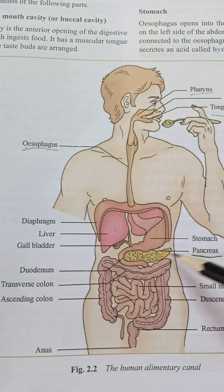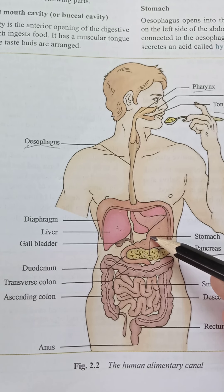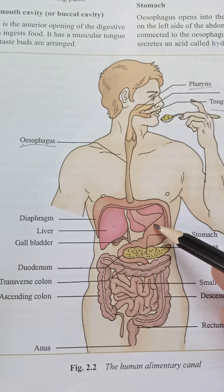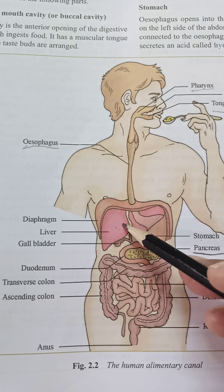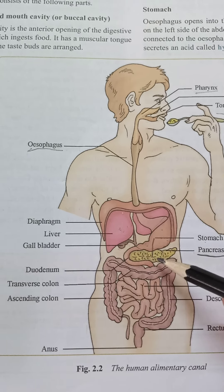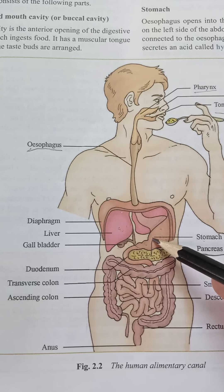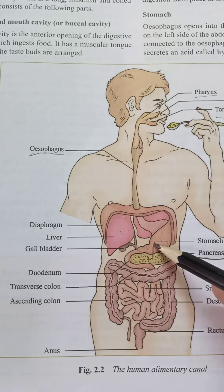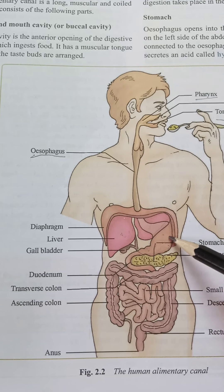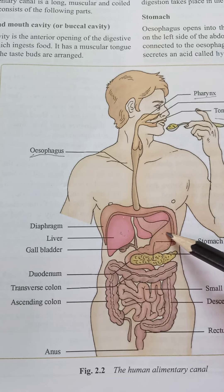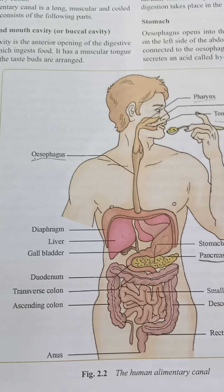Pancreas میں سے بھی digestive juices secret ہوتے ہیں اور وہ stomach میں جاتے ہیں۔ Stomach کے اندر bile juice، liver کا juice، pancreas کے digestive juices، اور stomach کا خود کا hydrochloric acid — یہ تمام غزا پر act کرتے ہیں اور اسے simpler form میں change کرتے ہیں۔